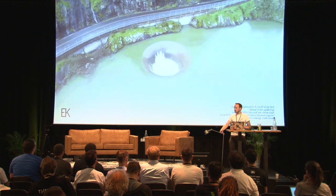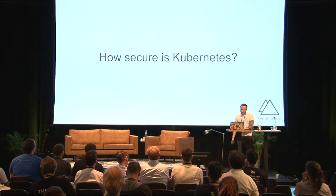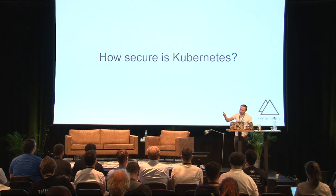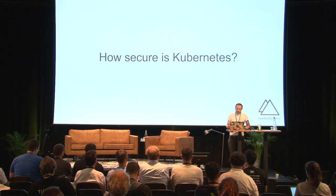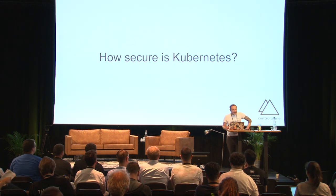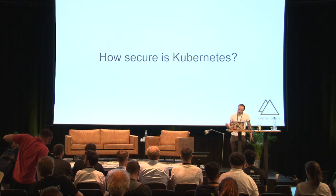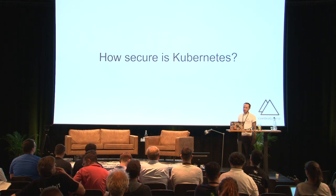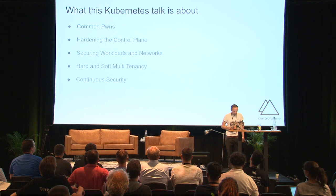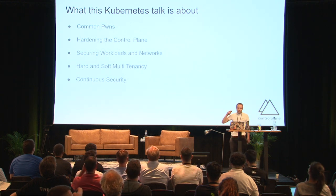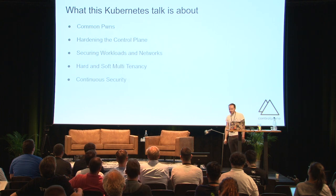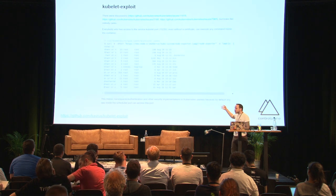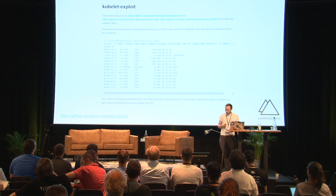How secure is Kubernetes? Is it safe to run a multi-tenanted workload? Is it safe to run in a public cloud, on a Raspberry Pi, in a safe somewhere? Can we really run Google-style multi-tenanted infrastructure securely, and how do we make sure that what's safe today stays secure tomorrow and persists configuration across cluster rebuilds? We will talk about common vulnerabilities, how to harden Kubernetes, what multi-tenancy looks like, and continuous security.